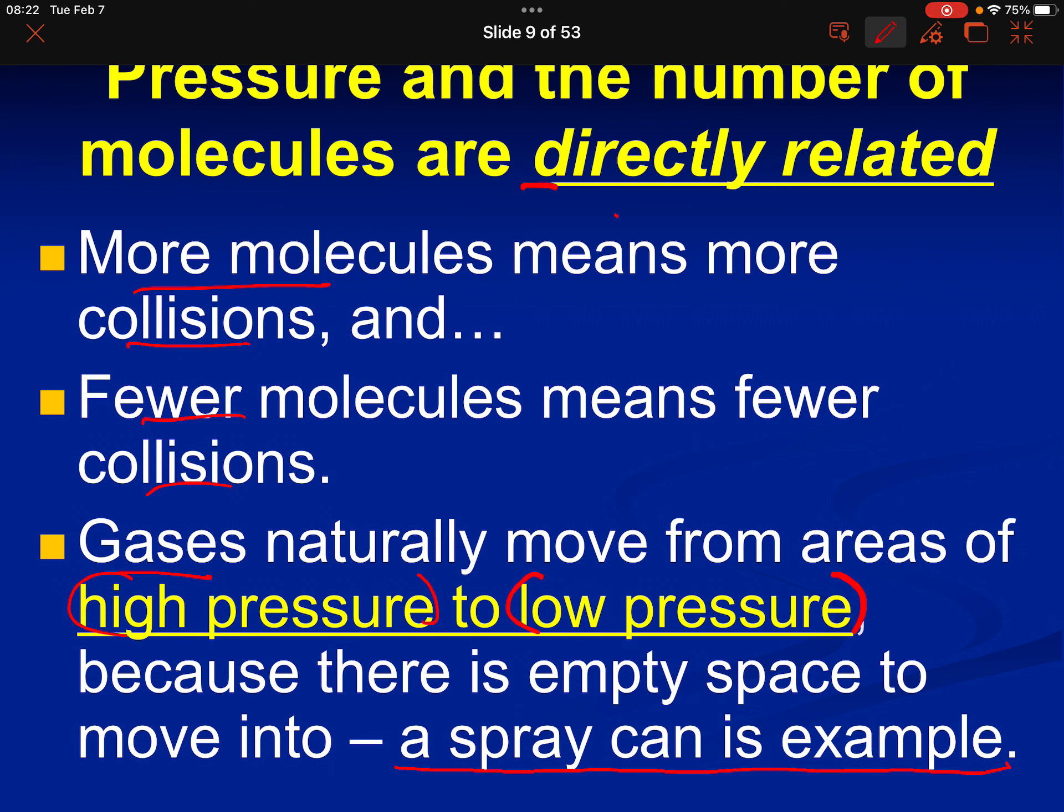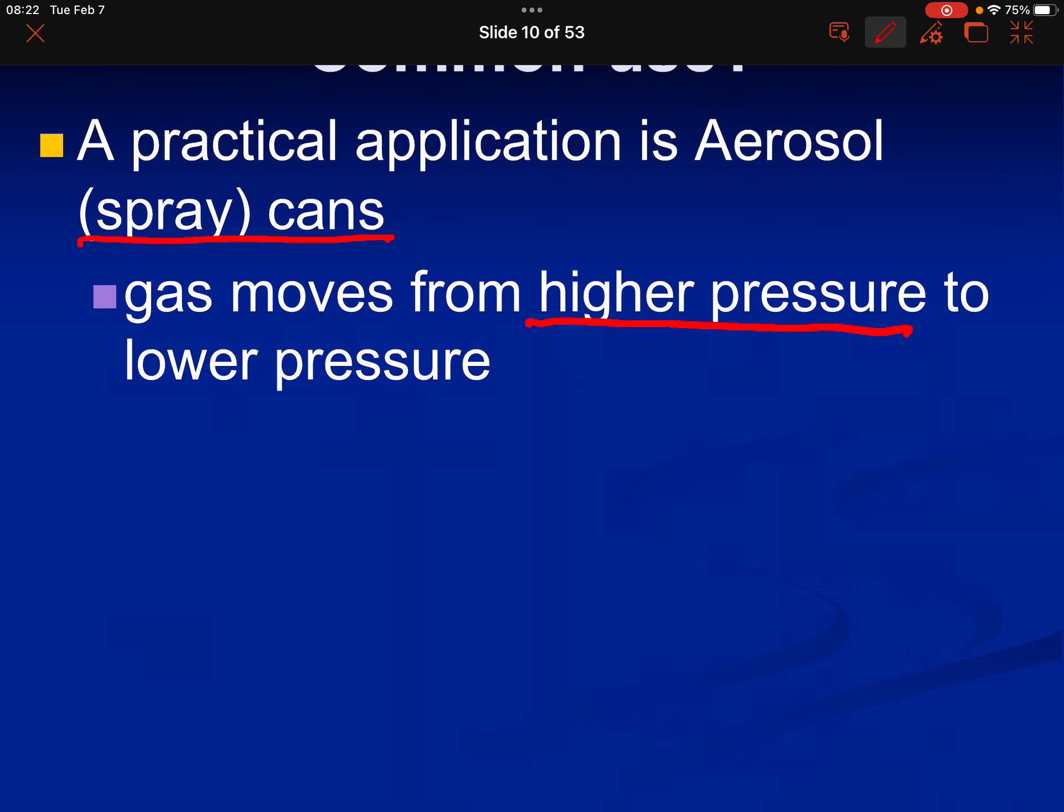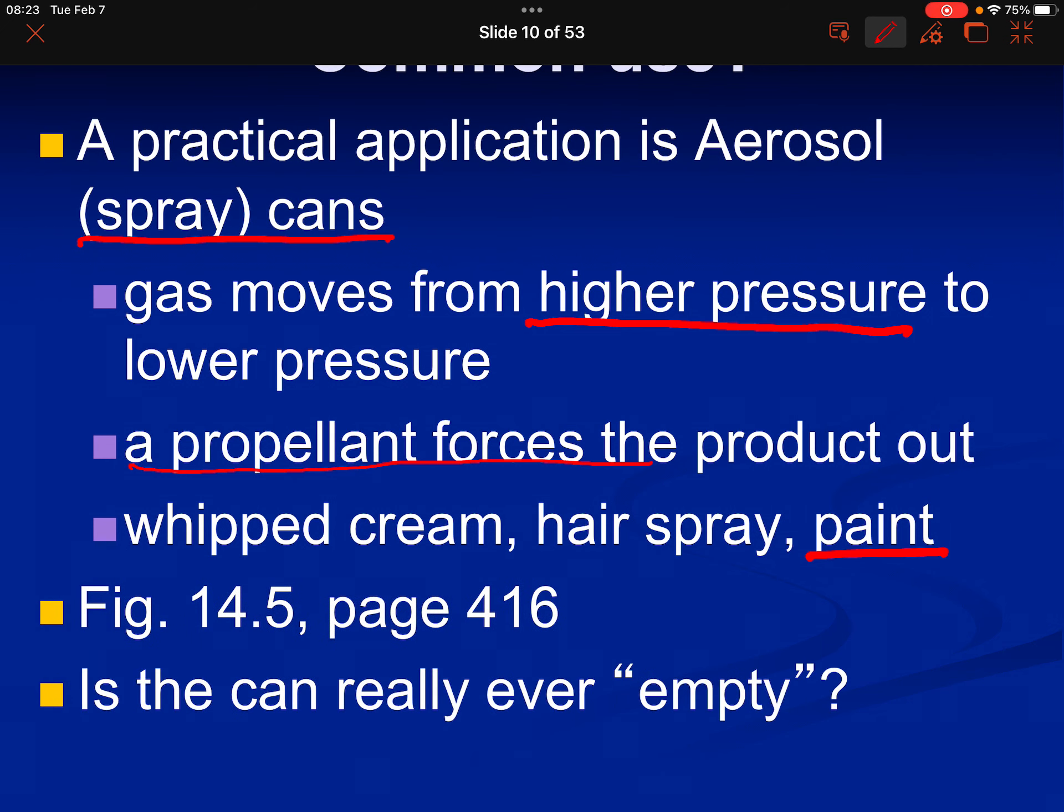Here's a factoid you already know. Gases naturally move from areas of high pressure to low pressure because there's empty space to move into. An example would be a spray can. You know that a car tire is under pressure. If you take a knife and stab it into a car tire, the air does not flow from the air into the tire. The air flows from the tire, which the air was under pressure, out of the tire into the atmosphere. So gases naturally move from high to low pressure. Aerosol spray cans. Everybody's familiar with spray cans. Gas moves from the high pressure in the can when you press a button to a lower pressure, which would be the atmosphere.